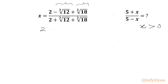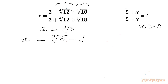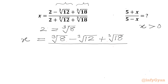Now we know that 2 can be written as cube root 8. So we can write x equal to (cube root 8 minus cube root 12 plus cube root 18) over (cube root 8 plus cube root 12 plus cube root 18).